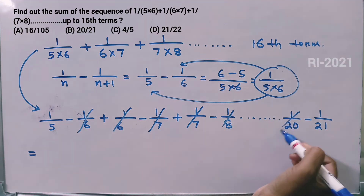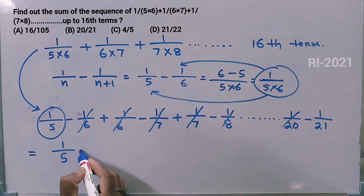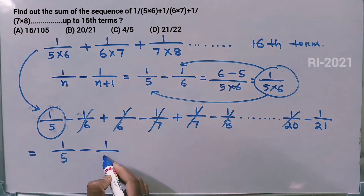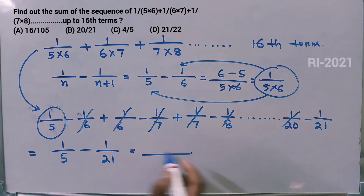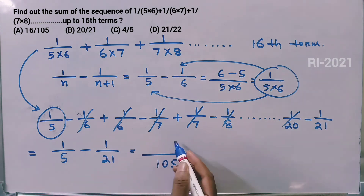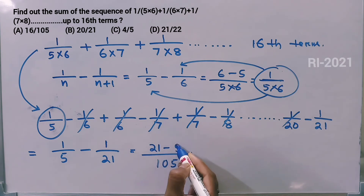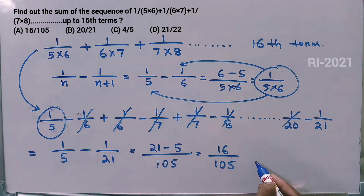After telescoping, we get 1/5 - 1/21 = (21 - 5)/105 = 16/105. So the answer is 16/105.